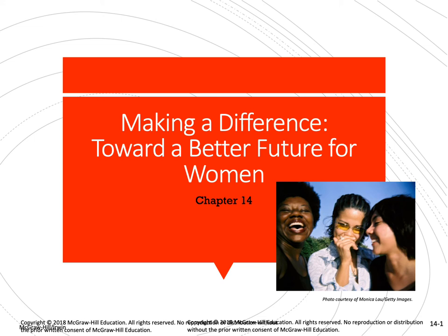In this video lecture I'm going to be discussing Chapter 14, the last chapter of the semester for Psychology of Women. This chapter talks about how the women's movement has evolved over time and how diverse it has become. This diversity is important because if the movement is going to succeed in its goal of equal rights for all women, different groups of women have different needs that have to be addressed — diversity in terms of ethnicity, social class, nationality, sexual orientation, and more.